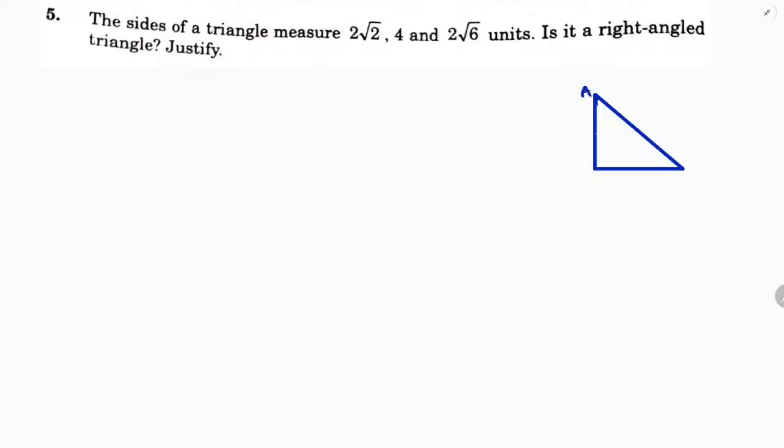So if we take triangle ABC, AC square equals sum of the squares of other two sides. Here what I will do, first I will take all the three sides and I will square all of them.